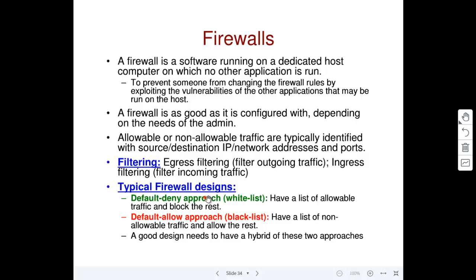When it comes to firewall design strategy, there are two typical approaches: the default deny approach and the default allow approach, also called whitelist and blacklist. A whitelist is a list of good things you want to allow — for example, packets from a particular network address, or packets belonging to FTP or web applications by port number. If incoming traffic doesn't match anything in the whitelist, it is dropped — hence 'default deny.'